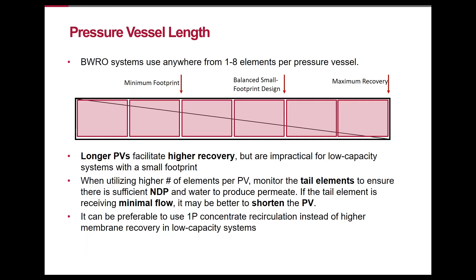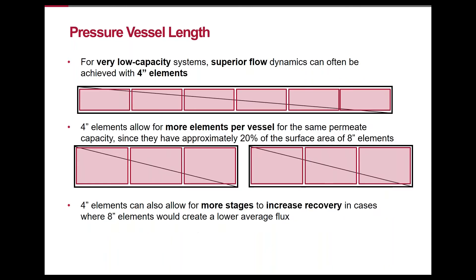There is much more flexibility in pressure vessel length in brackish water than in seawater RO. Depending on the size of the system, the footprint available, and the desired recovery, it may be optimal to use a shorter pressure vessel. In low flux, high recovery systems, there is often insufficient concentrate flow to the tail element or insufficient net driving pressure to produce permeate. In such systems it can be better to use lower membrane recovery combined with partial concentrate recirculation to increase recovery. In smaller systems it can also be necessary to use four-inch elements instead of eight-inch, because smaller elements allow for longer pressure vessels over the same surface area, which increases the potential recovery across that vessel.